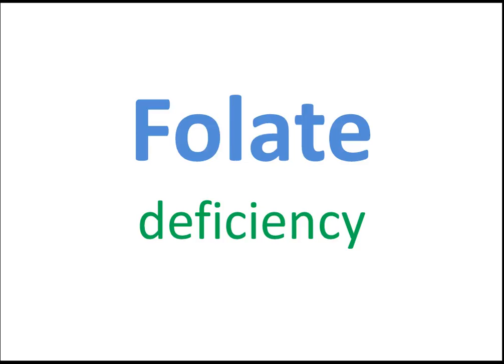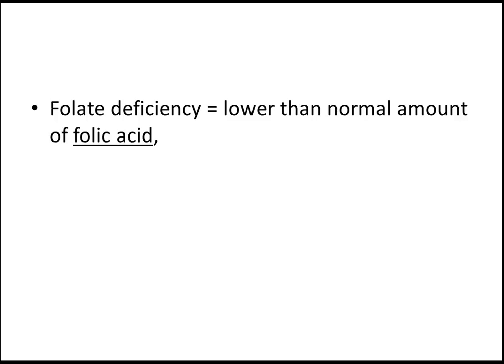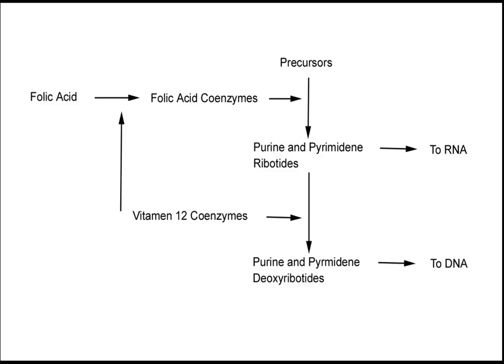Folic acid deficiency is nothing but the folic acid level is lower than normal in the body. This is a very important table you should know. Folic acid leads to folic acid coenzymes, which cause precursors to purines and pyrimidines — ribotides to RNA. These purines and pyrimidines lead to deoxyribotides to DNA, together with vitamin B12 coenzymes. So folic acid and vitamin B12 work together.